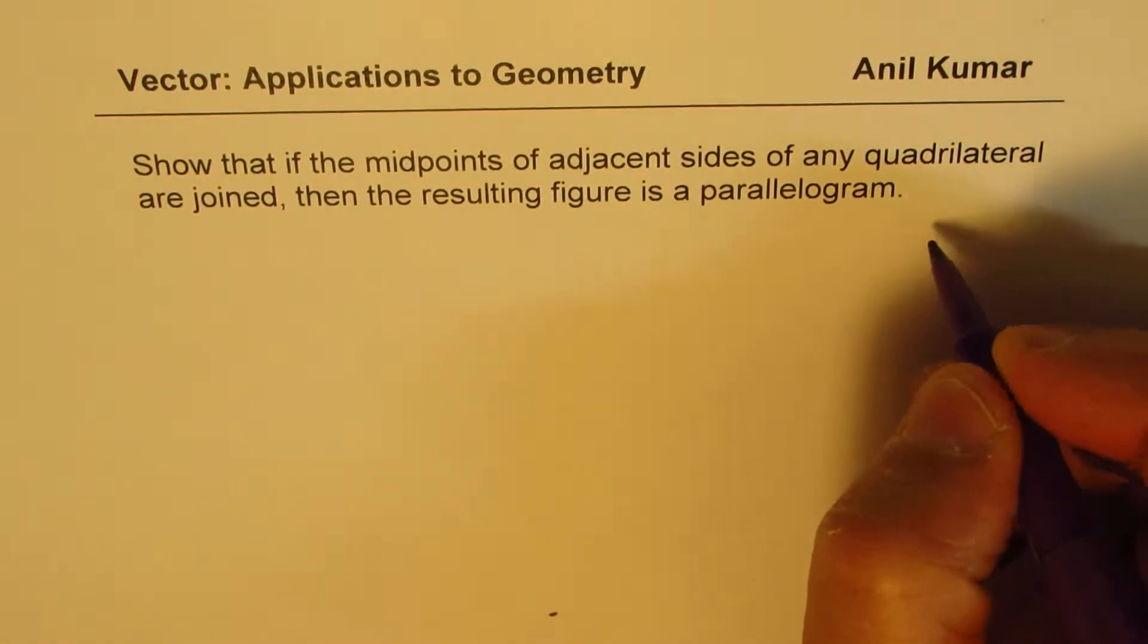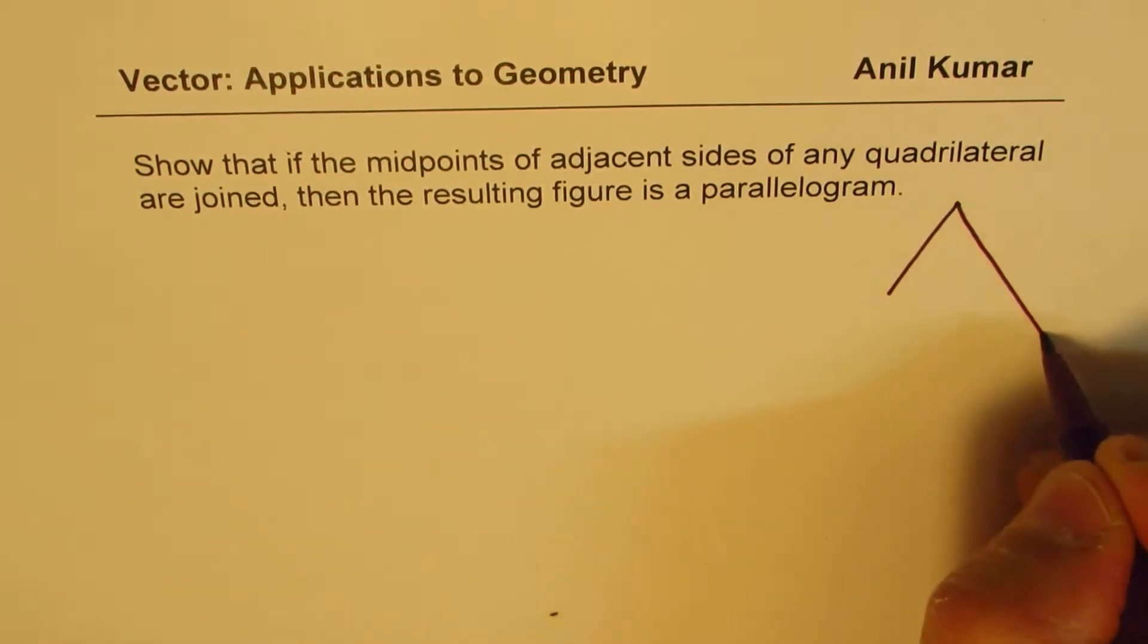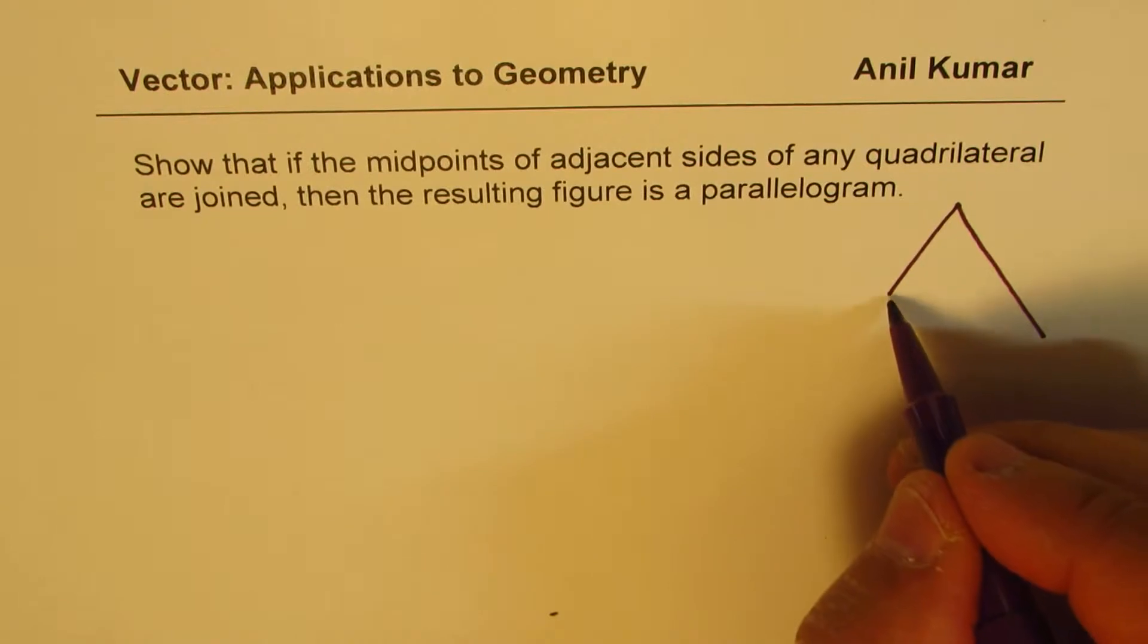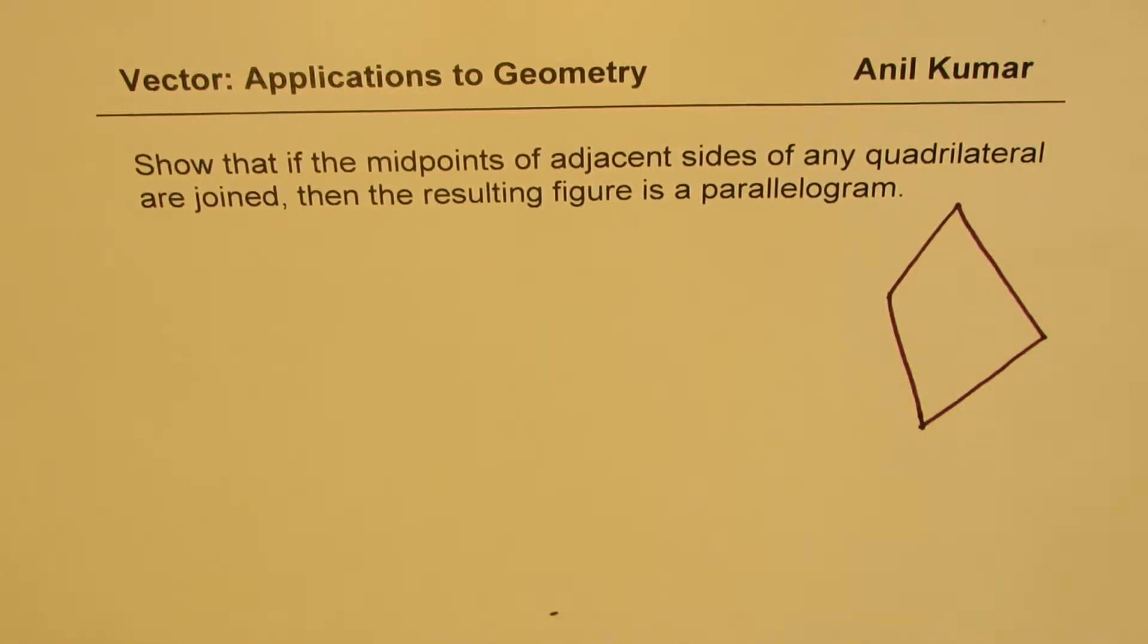So let us construct a quadrilateral. We'll just construct a general quadrilateral, not a rectangle or a square. Let's just make a random one. It looks like an irregular one.